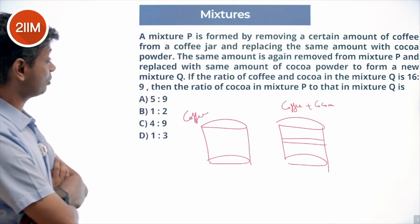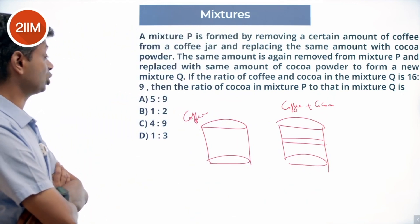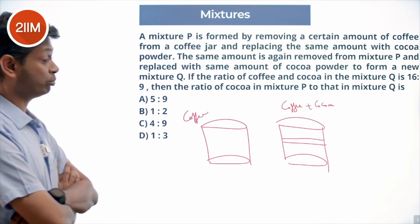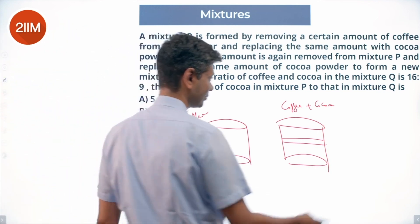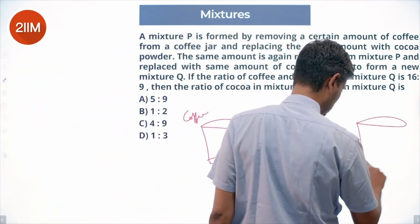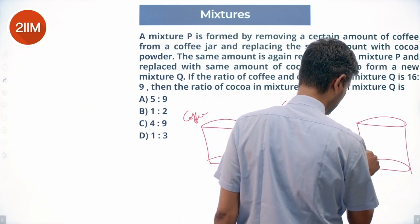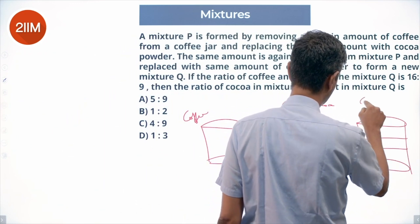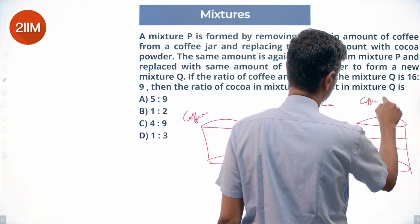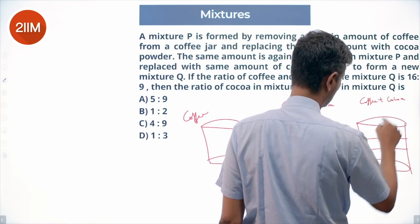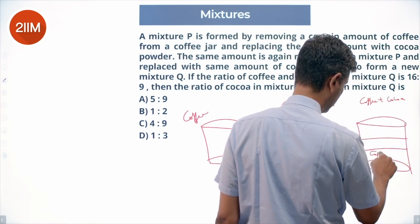The same amount is again removed from mixture P and replaced with the same amount of cocoa powder to form a new mixture Q. Even less coffee - this is also coffee plus cocoa, but just less coffee here, more cocoa here.